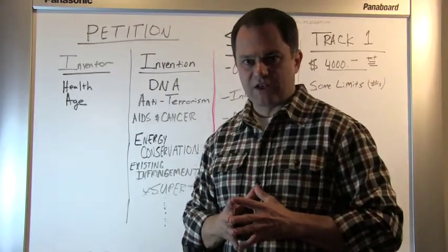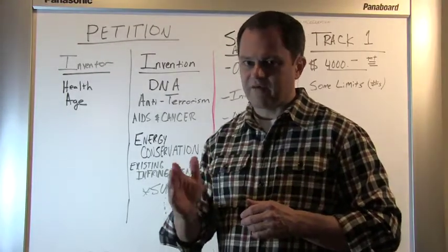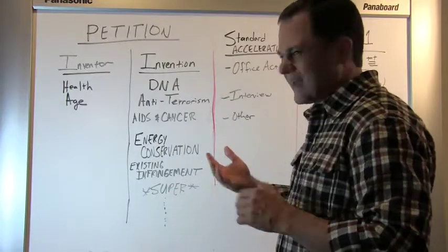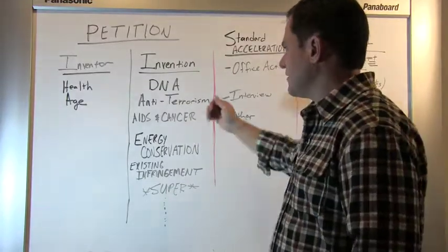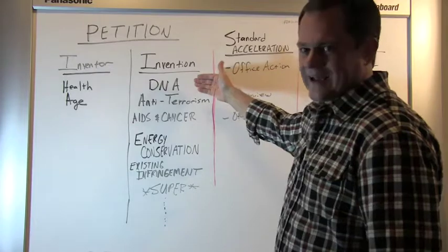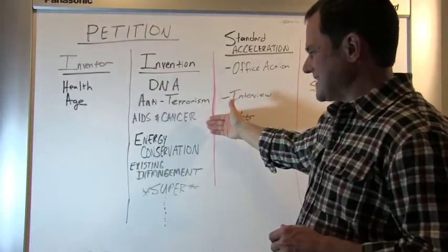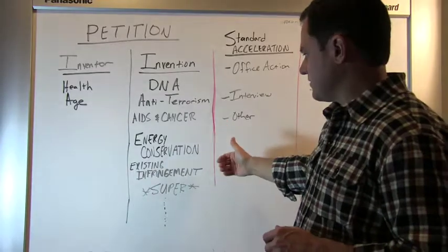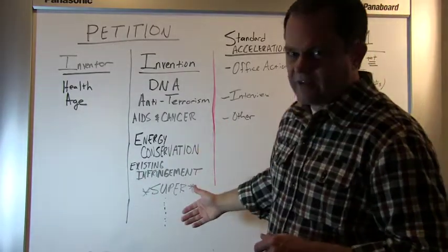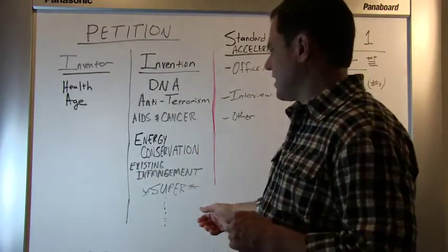The second way an invention can be accelerated is based on the invention's subject matter. These are simply listed in a statute itself and relate to things like DNA. Now, invention dealing with anti-terrorism, AIDS and cancer, energy conservation, and there's a list of other things that apply that are less common.